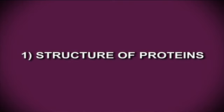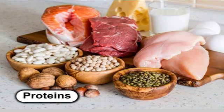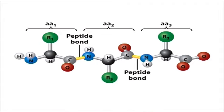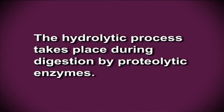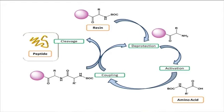Proteins are complex macromolecules made up of 20 different amino acids. They are hydrolyzed to form simple substances and ultimately amino acids. These amino acids are the basic structural units of proteins. The hydrolytic process takes place during digestion by proteolytic enzymes. Proteins give rise to polypeptide; polypeptide gives rise to peptide, and peptides finally yield amino acids. The general structure of amino acids is as shown on the screen.